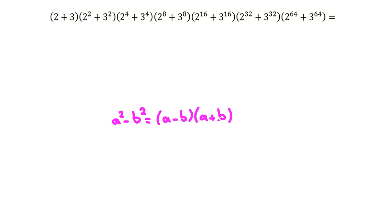For solving this, we use this identity. We multiply this by 3 minus 2. Since 3 minus 2 is 1, the result doesn't change.